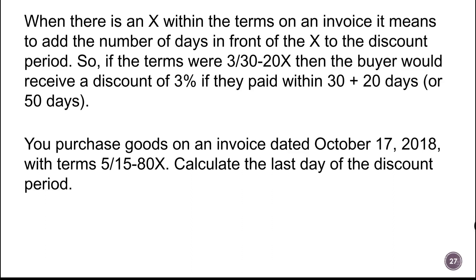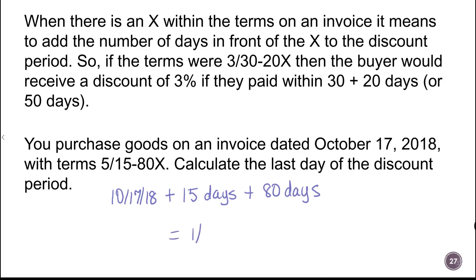For example: you purchase goods on an invoice dated October 17, 2018, with terms 5/15-80X. To calculate the last day of the discount period, we take 10/17/18 and add 15 days plus another 80 days — a total of 95 days — and the end of discount would be 1/20/19. To find the end of credit, we would just add another 20 days. That wraps up this video and the rest of section 5.2.